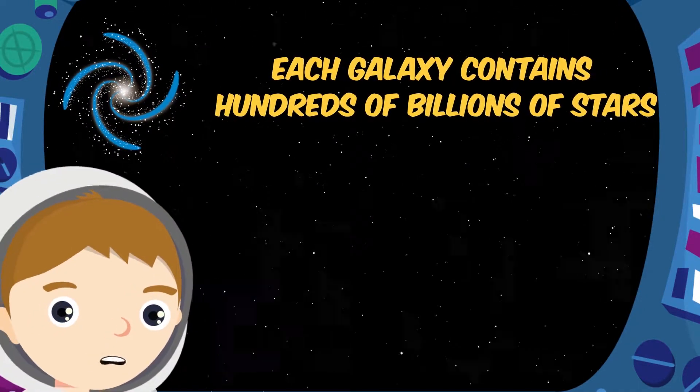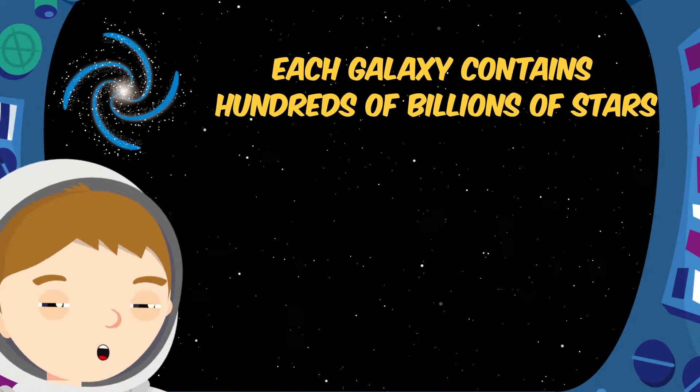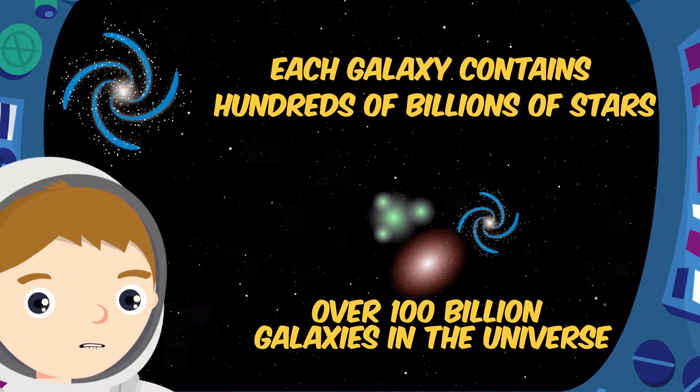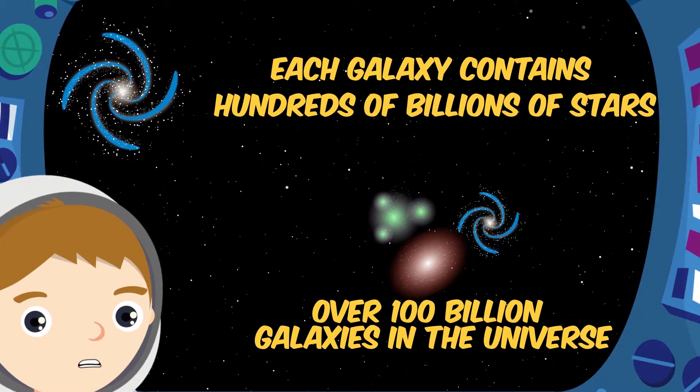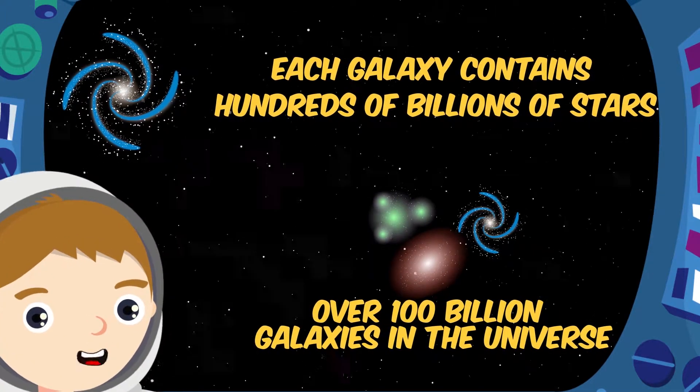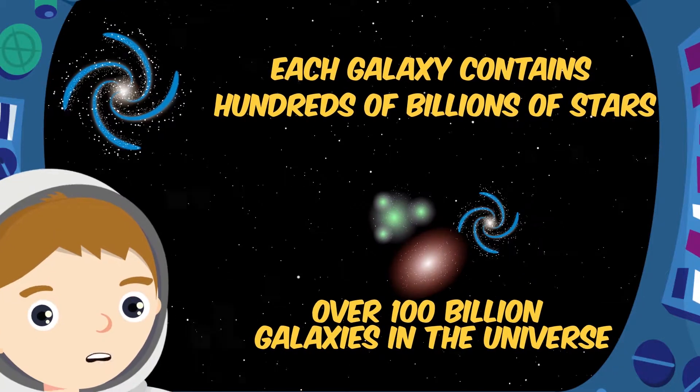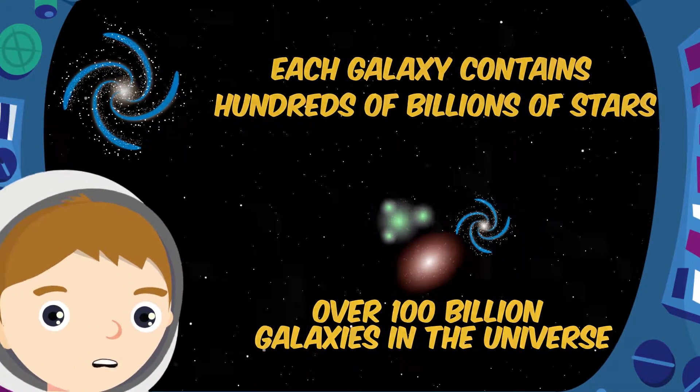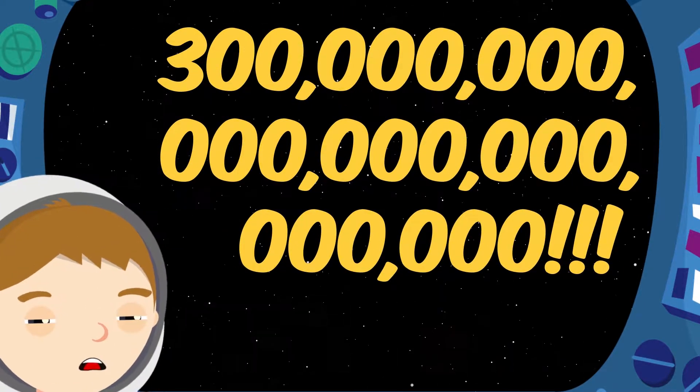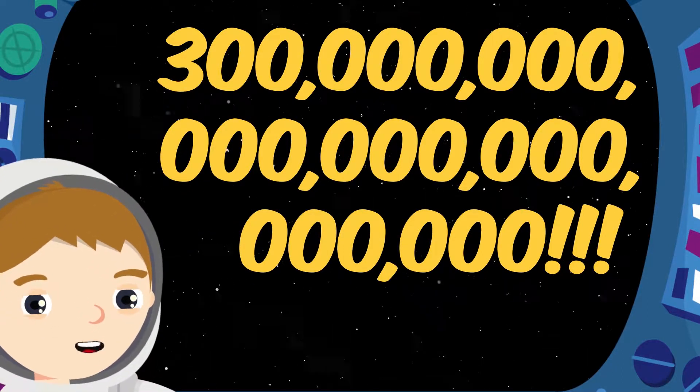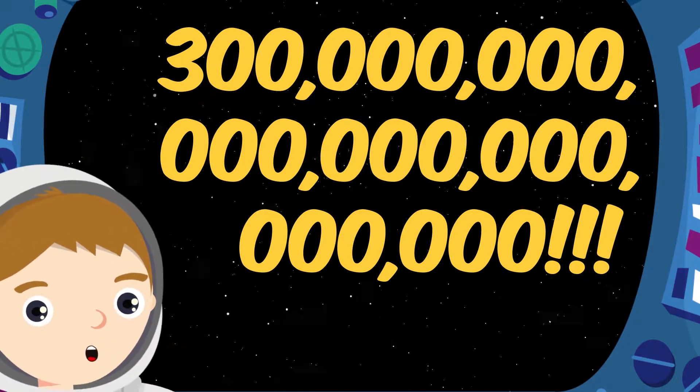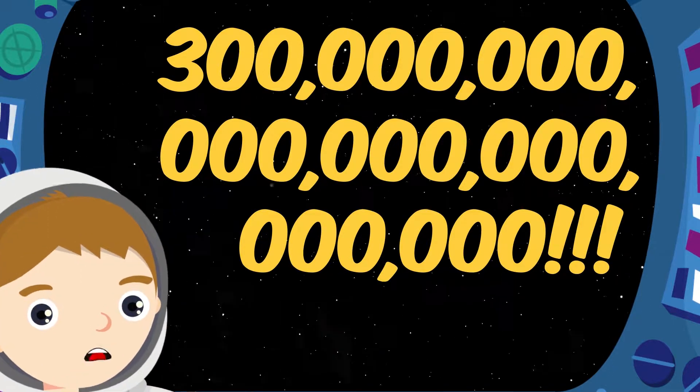In fact, each galaxy contains hundreds of billions of stars. And there is estimated to be over 100 billion galaxies. The total number of stars in the universe is mind-boggling. Estimated to be at least 76 trillion and possibly as high as 300 sextillion. That's 3 with 23 zeros. That leaves me seeing stars.